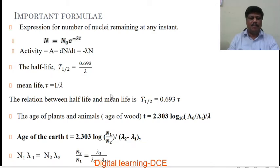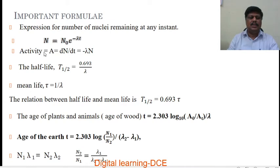Before going to solve some problems we have to know some formulae in natural radioactivity. The first one is the expression for number of nuclei remaining at any instant in a radioactive sample, given by N = N₀ e^(−λt). The activity A is equal to the rate of radioactive disintegration, that is dN/dt = −λN. Here λ is the decay constant, N is the number of atoms remaining, and N₀ is the initial number of atoms at t = 0.